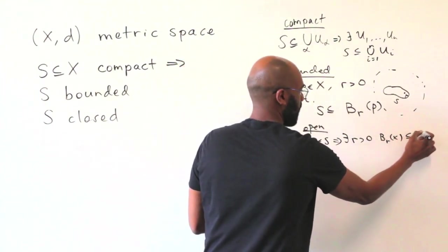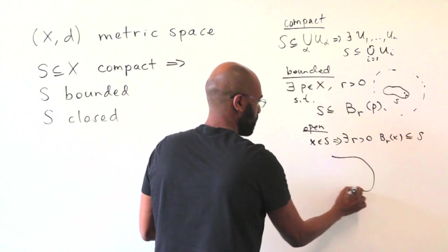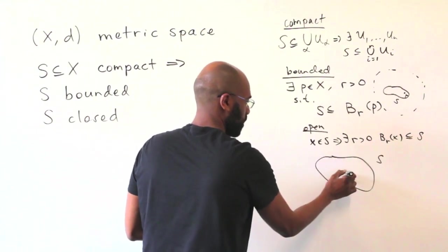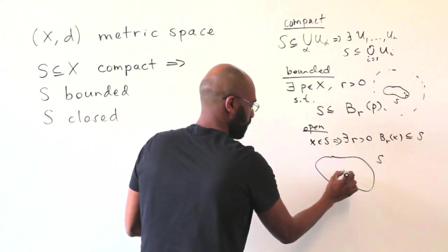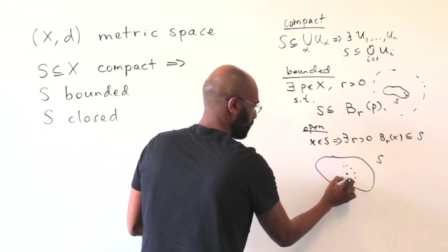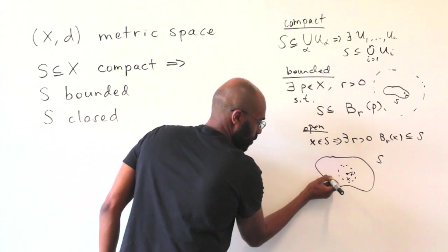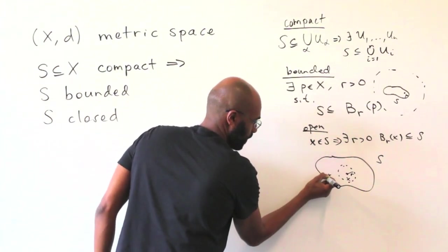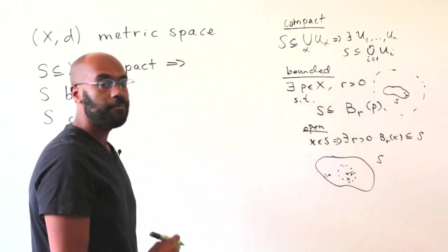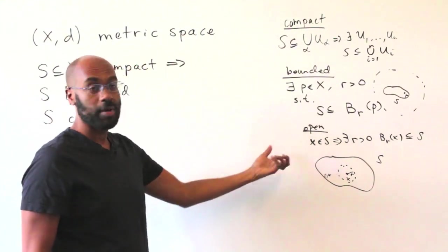So the picture here again is you have this set S, you pick a point inside, there's a ball of a certain radius R that stays inside of the set. So if you were like whatever here, you can pick a ball like this and stay inside of the set as well. And a closed set is one whose complement is open.